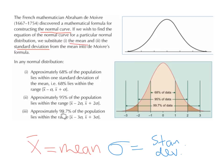And approximately 99.7% of the population lies within the range, the mean minus 3 times the standard deviation, comma, the mean plus 3 times the standard deviation.